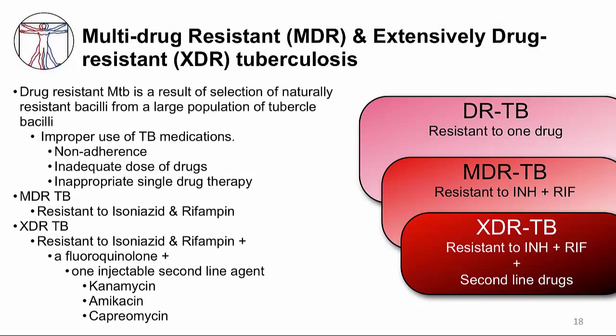Drug-resistant MTB results from selecting out naturally occurring antibiotic-resistant bacilli from a large population of MTB. This generally happens from improper use of TB medications — often non-adherence to the long duration of treatment, but sometimes inadequate dosing, inappropriate single-antibiotic treatment, or even poor physician decisions. Resistance to TB antibiotics is named differently depending on which antibiotics are involved.